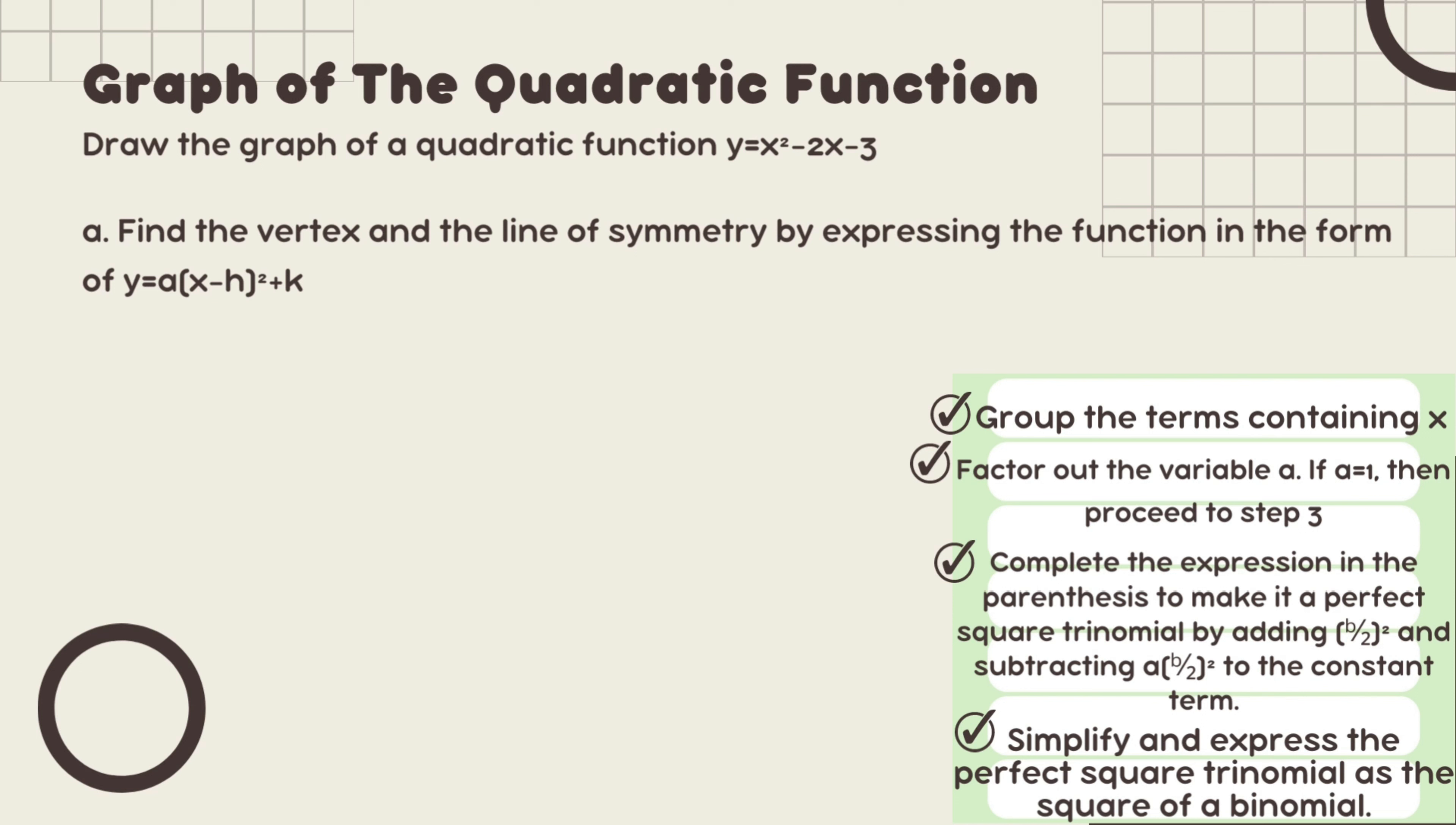Step 3 is to complete the expression in the parenthesis to make it a perfect square trinomial by adding the quantity of b over 2 squared, and then subtracting a times the quantity of b over 2 squared to the constant term. Simplify and express the perfect square trinomial as a square of a binomial.